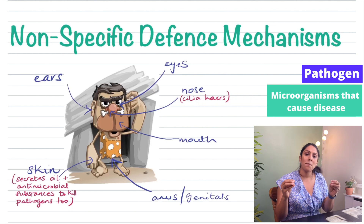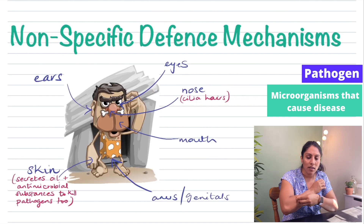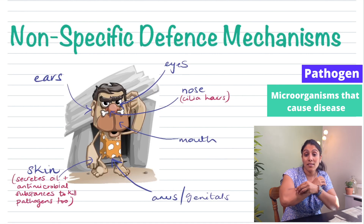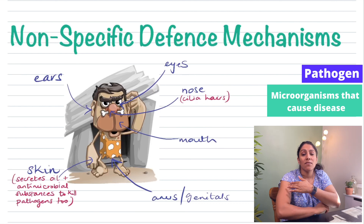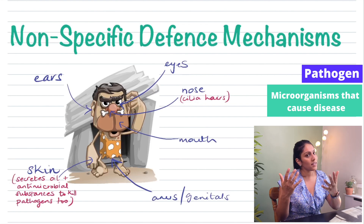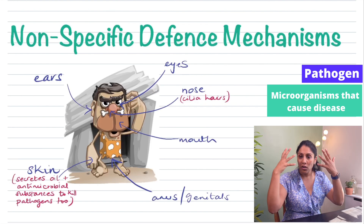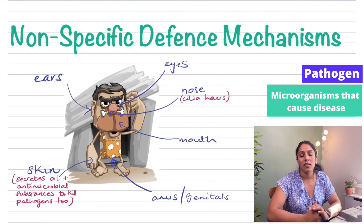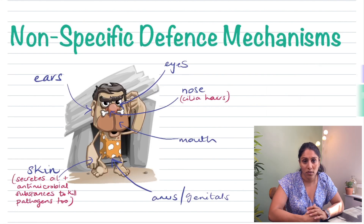If a pathogen tries to get into your body through the skin, not only does the skin produce oil, it also produces antimicrobial substances which stop pathogens from entering. Pathogens will then try to find other entry points, such as your ears, nose, or eyes.